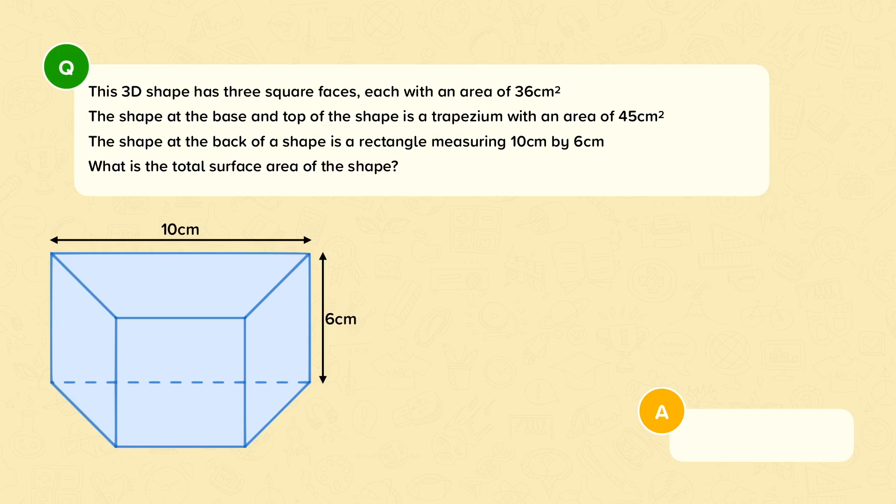The shape at the back of the shape is a rectangle, measuring 10cm by 6cm. What is the total surface area of this shape?